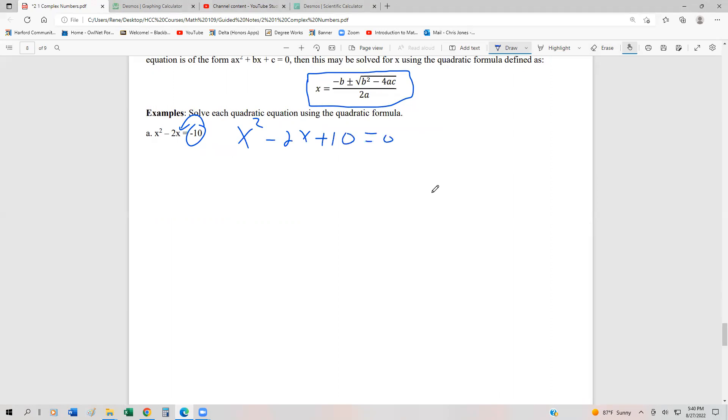In our quadratic, a is going to be the coefficient of the x squared, b is the coefficient of x, and c is the constant. So in this formula, a is 1, b is negative 2, and c is 10.